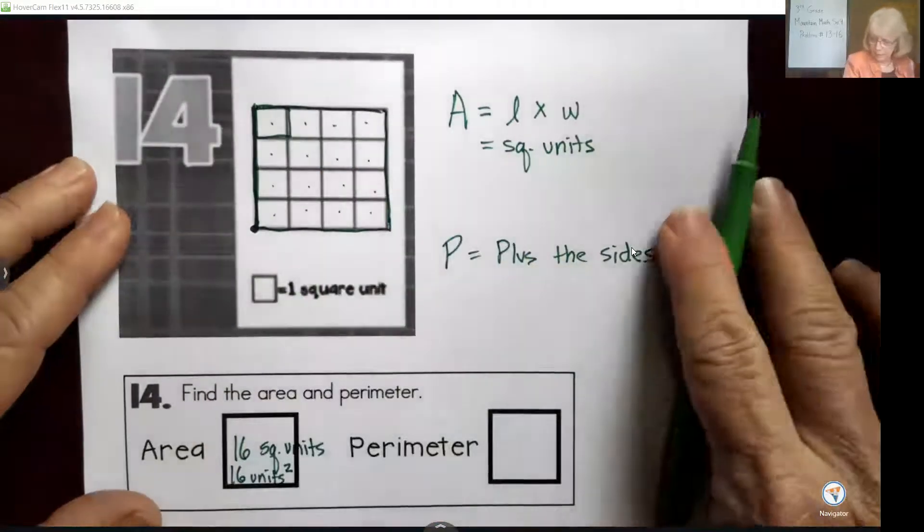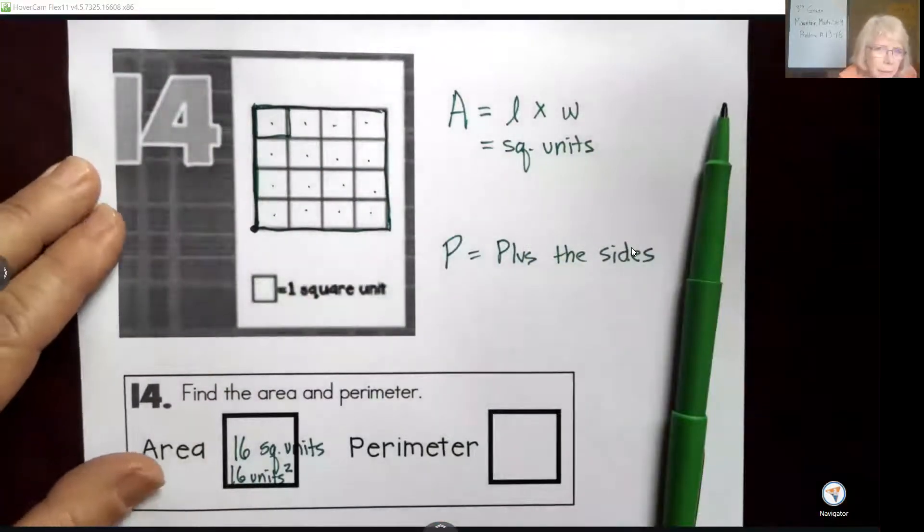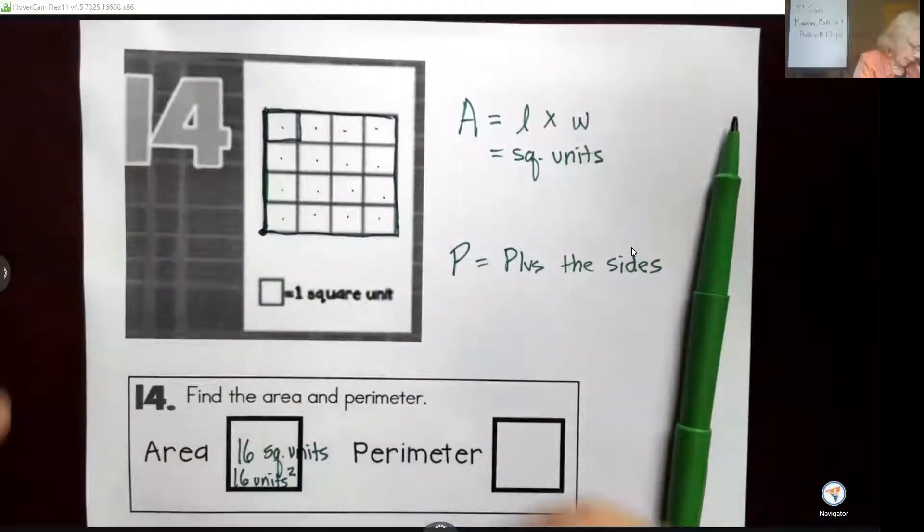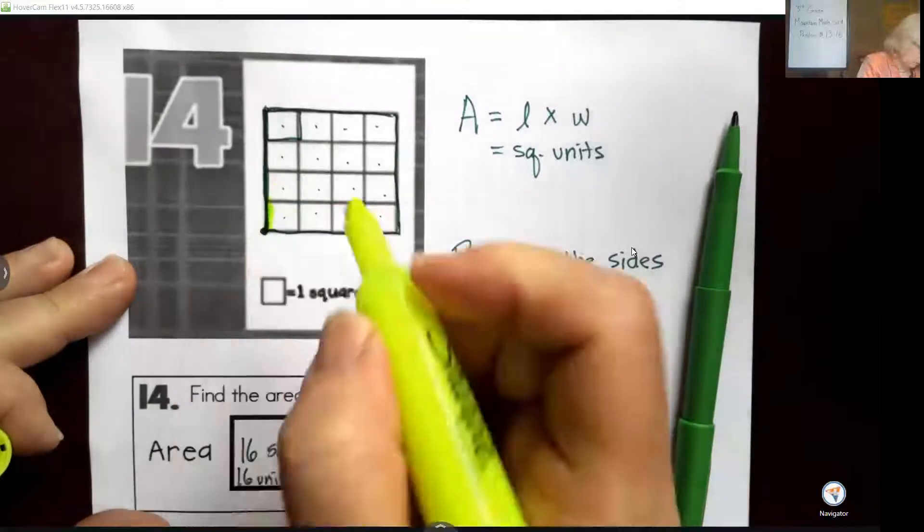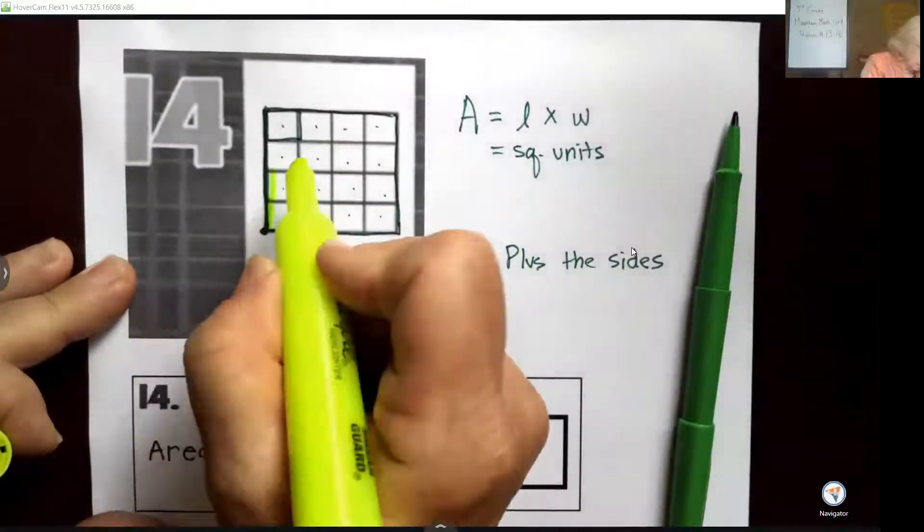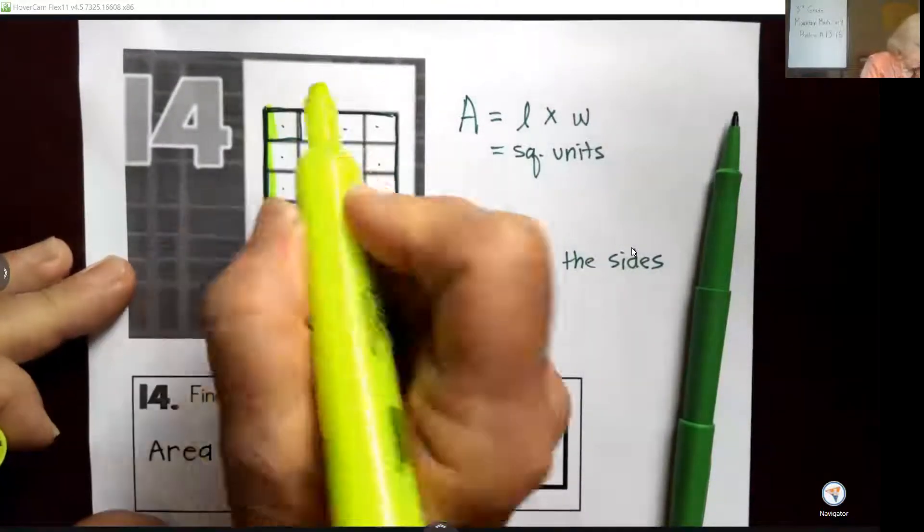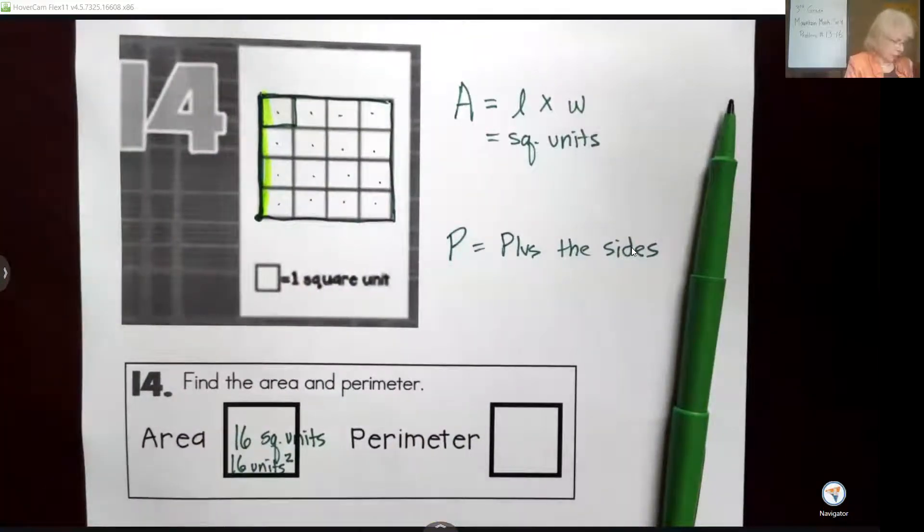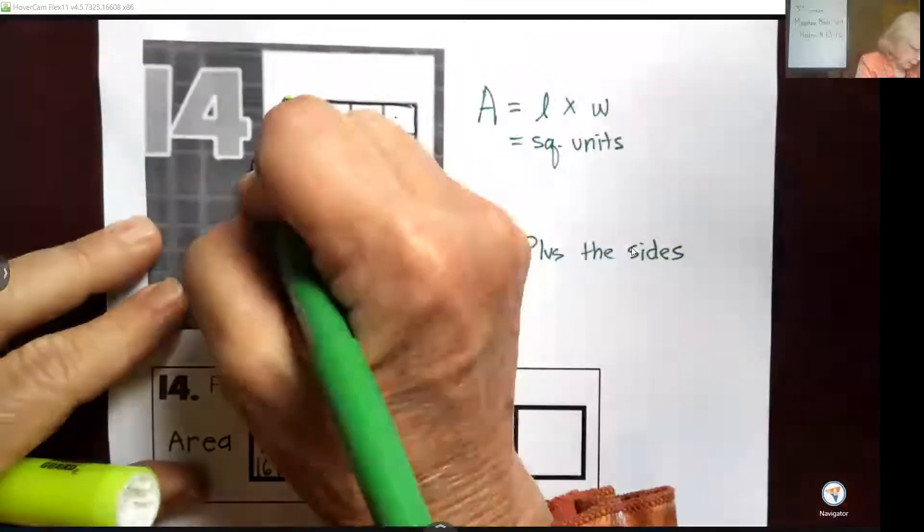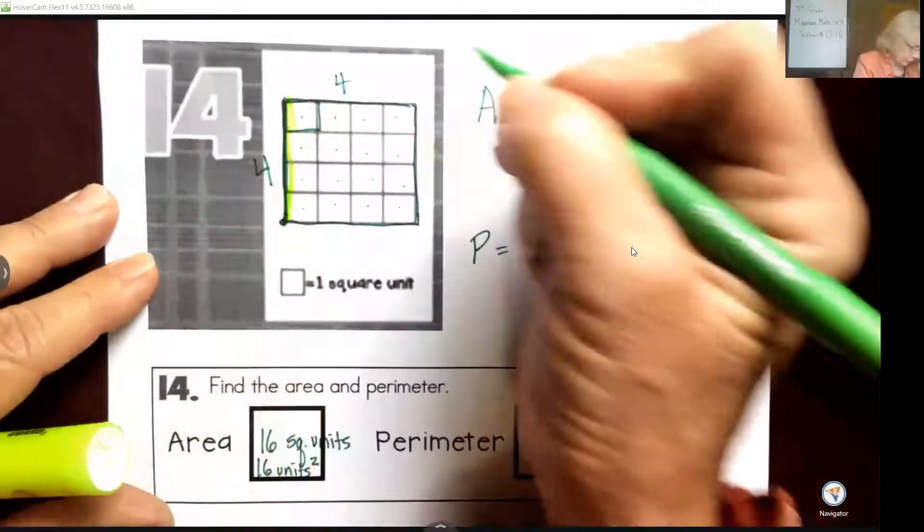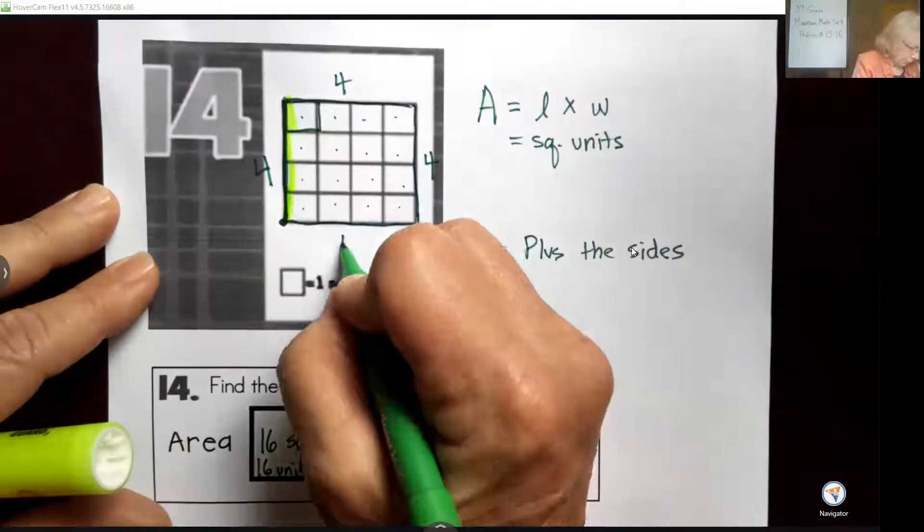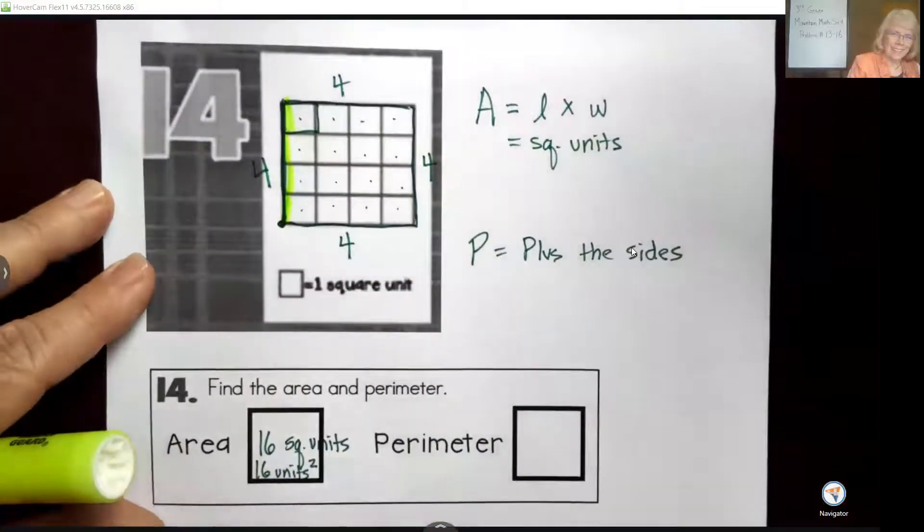When I'm counting the length there, I'm counting just the side of the square. So I'm counting: 1, 2, 3, 4. It's 4 units in length, and we'll put that here. If I go around and count each side, I'm going to see it's 4 by 4 by 4 by 4.